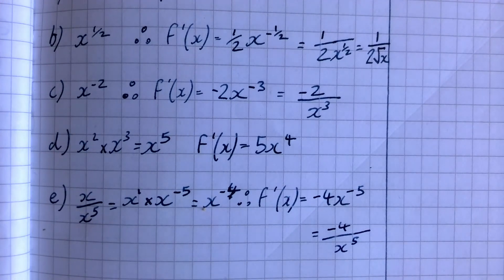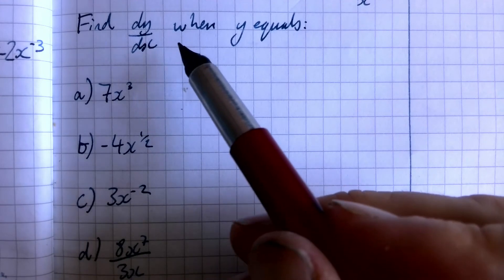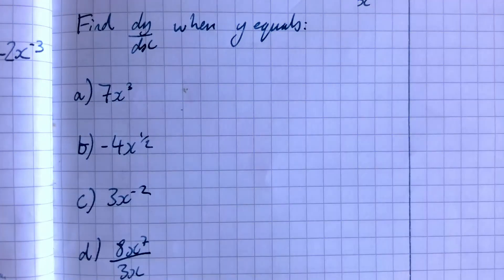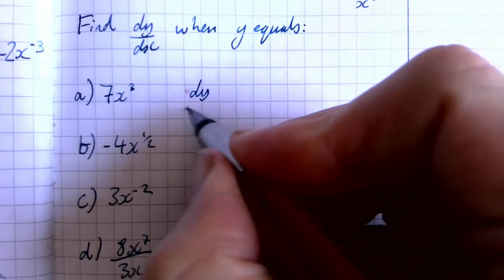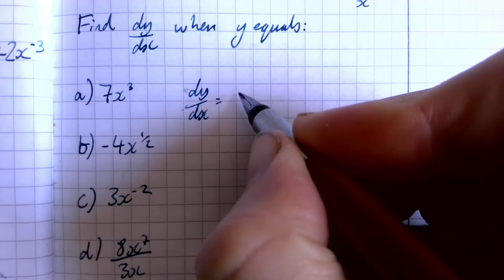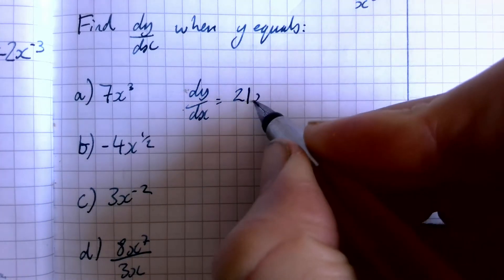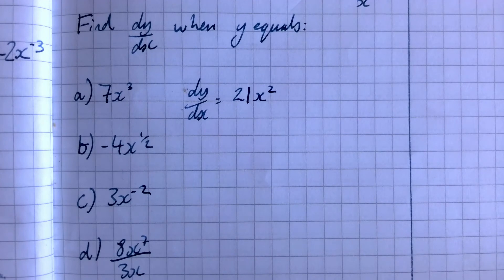And the other form you can have is where it says find dy over dx when y equals. So y is equaling to seven x cubed. So dy over dx is going to be, we multiply by the power. So seven times three is 21. And we drop the power by one. So it gives us 21 x squared.